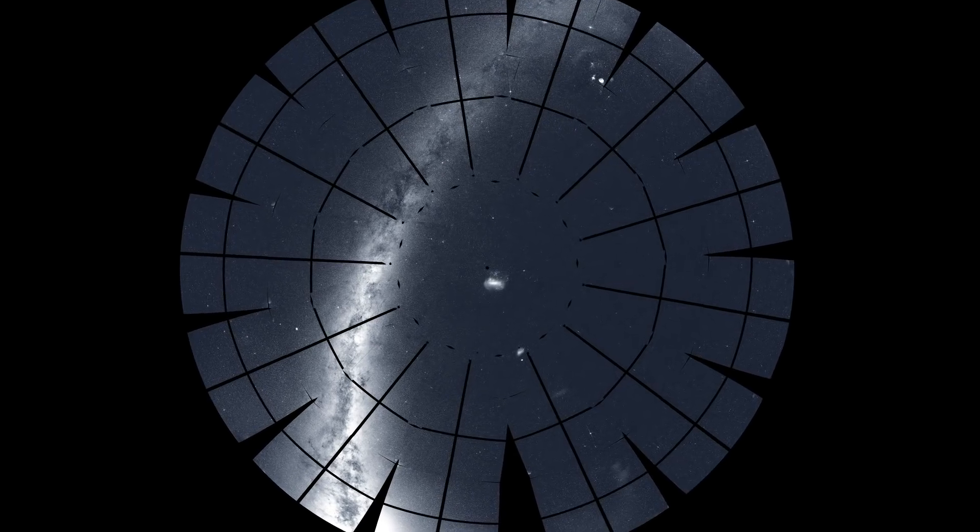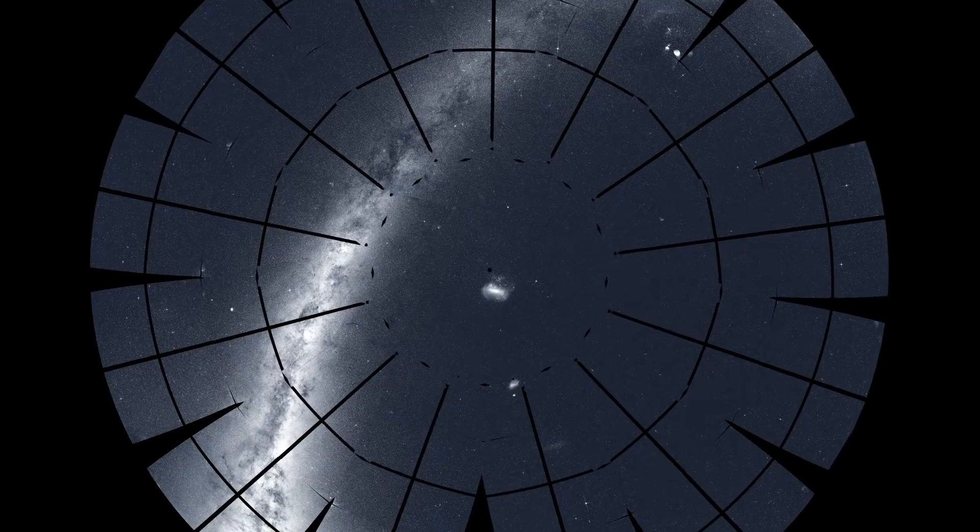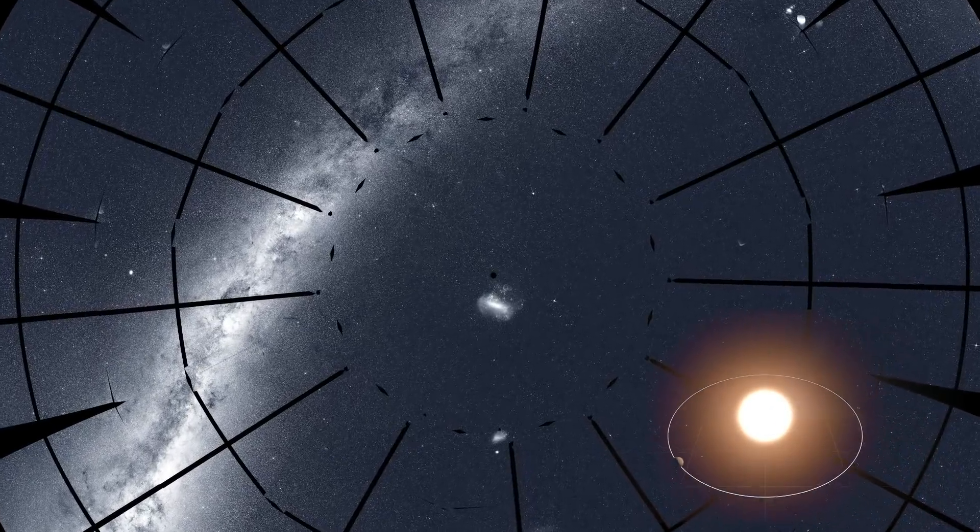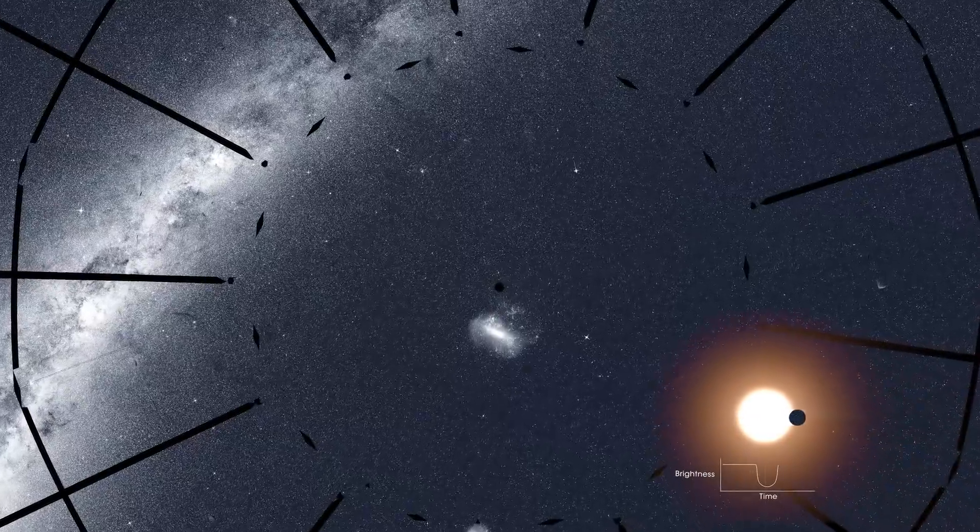TESS stares at patches of sky for long stretches, recording light from thousands of stars. Some of these stars have planets that cross or transit in front of them. TESS sees these events as tiny, regular dimmings of the host stars.